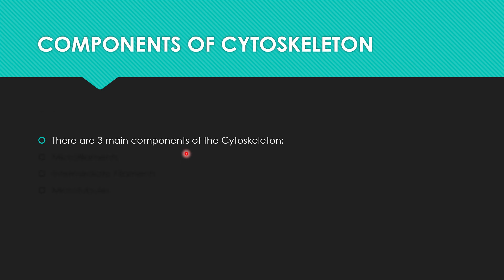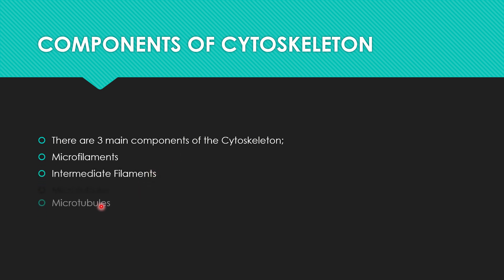There are three basic components of the cytoskeleton: microfilaments, intermediate filaments, and microtubules. Microfilaments are the thinnest, intermediate filaments are intermediate in size as the name indicates, and microtubules are the thickest of these three components.